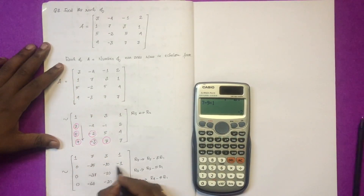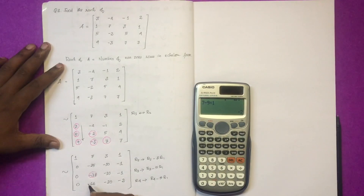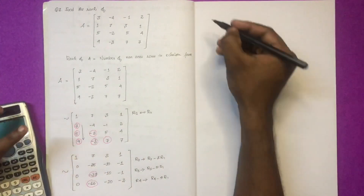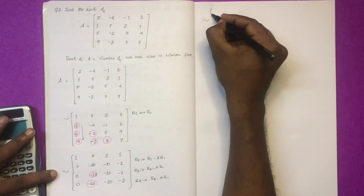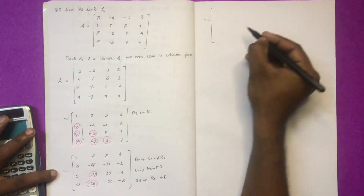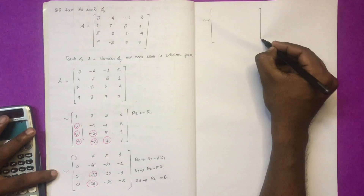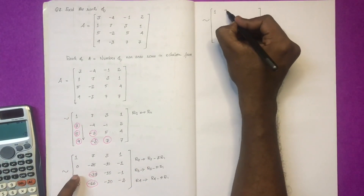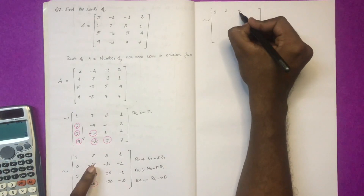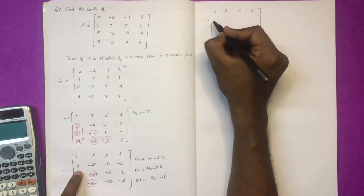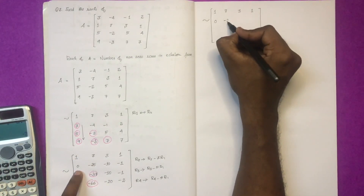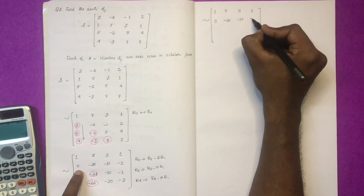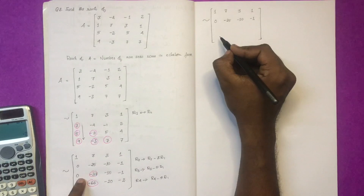Okay, now we have to write this element. We will write this element and this element. So we will write: 1, 7, 3, 1 again; then 0, minus 25, minus 10, minus 1.